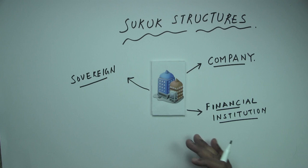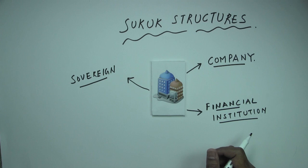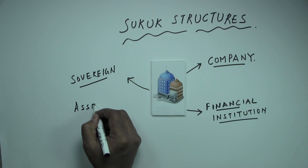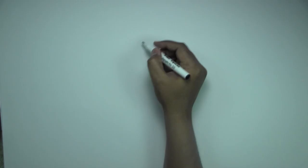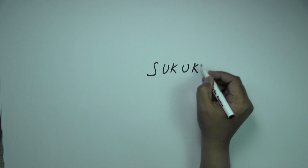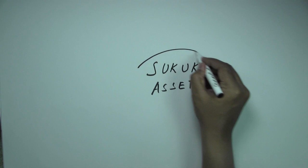The next step is how this sovereign, company, or financial institution can raise funds through a sukuk, and what are the main questions they have to address before thinking of issuing a sukuk. The first main important point is to think about what is the asset — the sukuk asset. We understand that in every sukuk there has to be an asset.